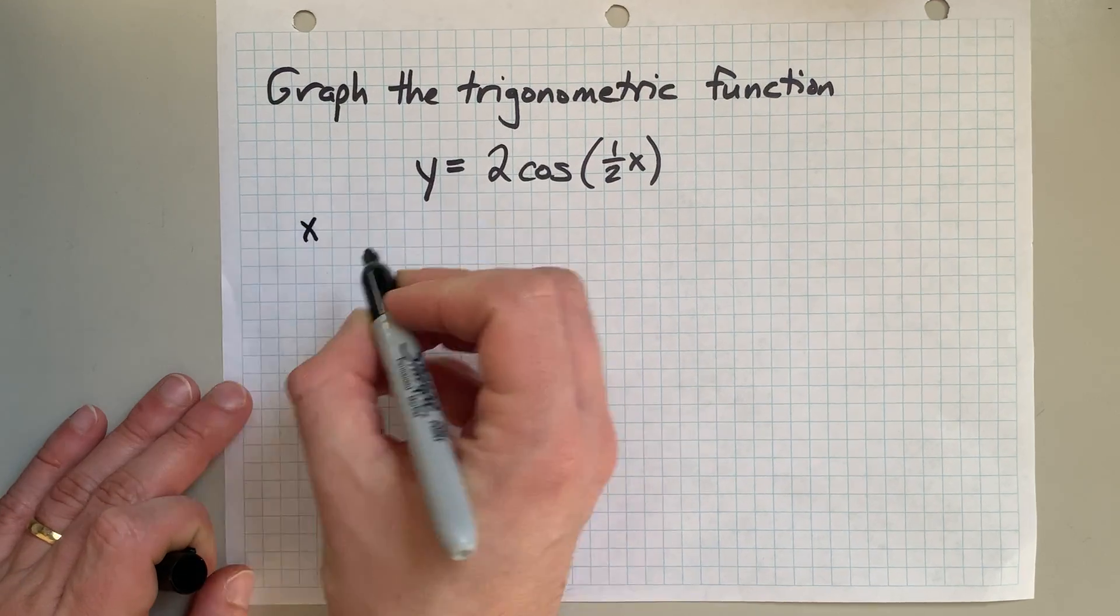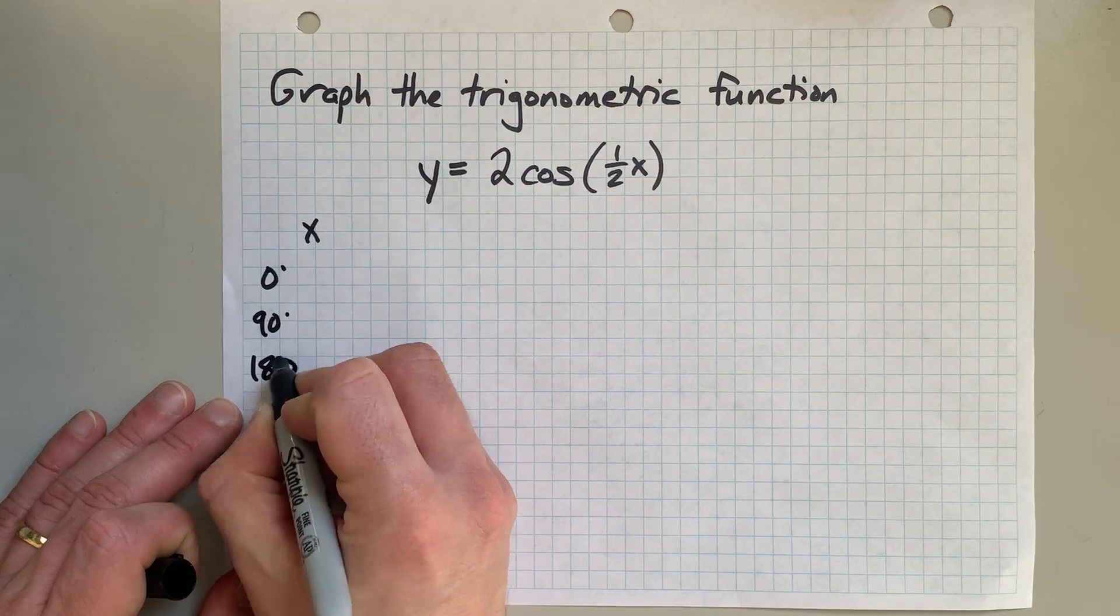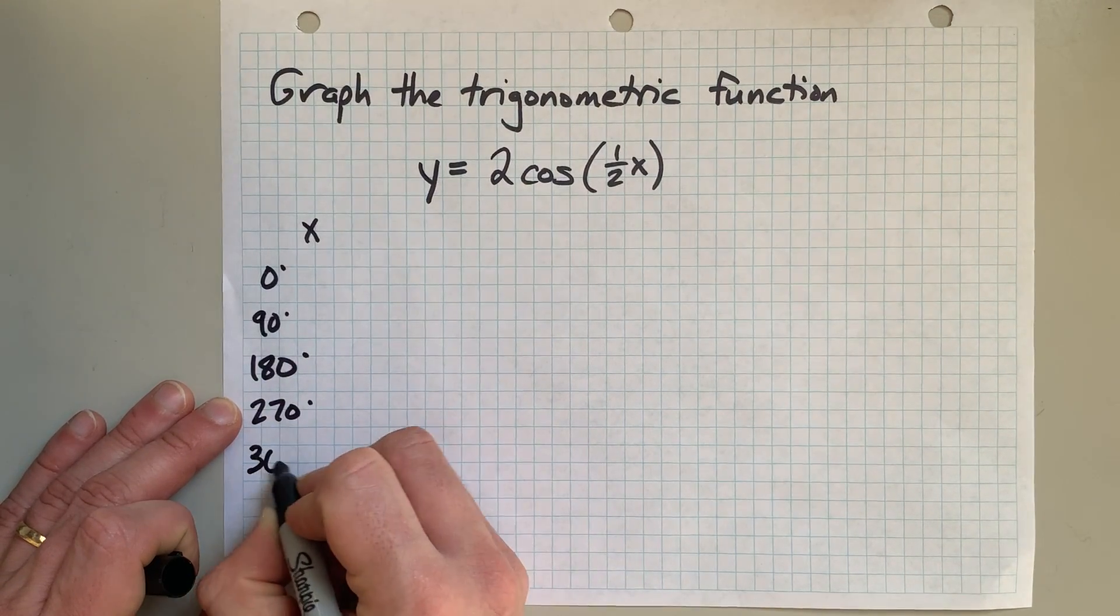Now my x's are going to be 0 degrees, 90 degrees, 180 degrees, 270, and 360.